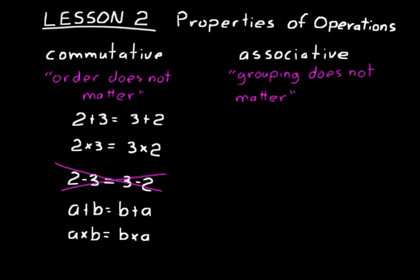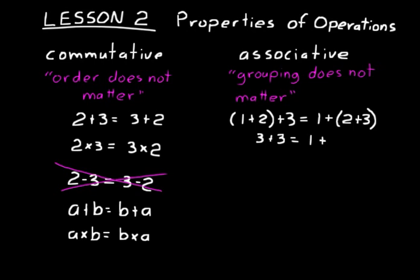Now let's talk about the associative property where grouping does not matter. Grouping means placing some numbers in parentheses. For example, one plus two plus three is the same thing as one plus (two plus three). If we simplify, on the left: (one plus two) is three, plus three equals six. On the right: one plus five equals six. Six equals six — that's the associative property of addition.